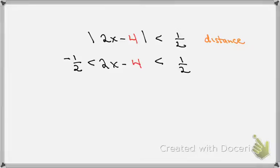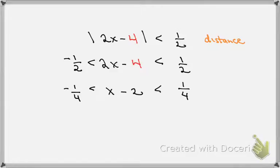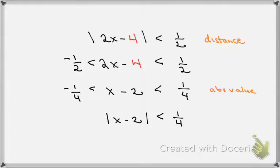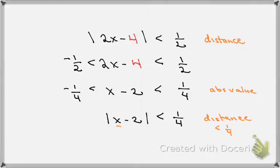I'll do some algebra here. Getting rid of the absolute values, that says minus one-half is less than 2x minus 4, which is less than one-half. Taking the next step, I divide everything by 2, giving minus one-fourth less than x minus 2, which is less than one-fourth. But this is just the definition of absolute value again, so: the absolute value of x minus 2 is less than one-fourth. This tells me the distance between x and 2 on the x-axis is less than a fourth.